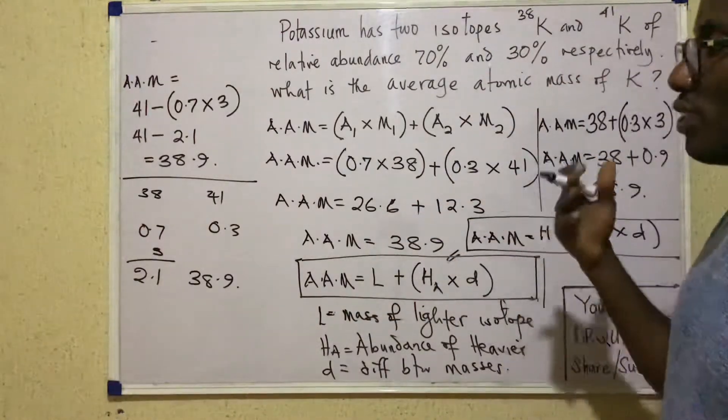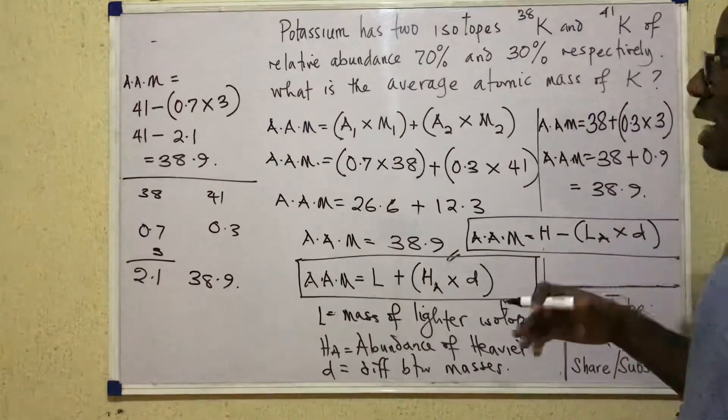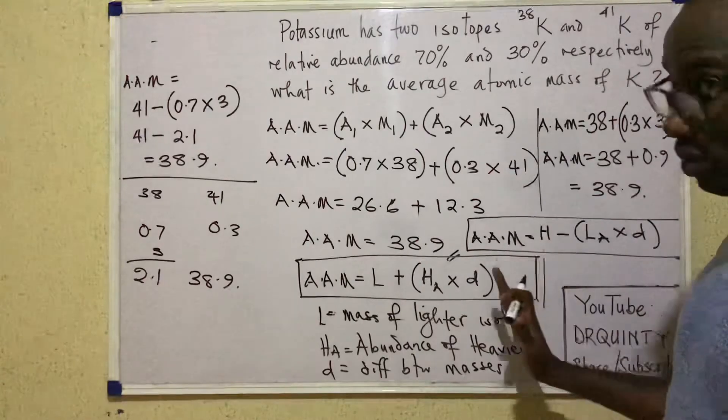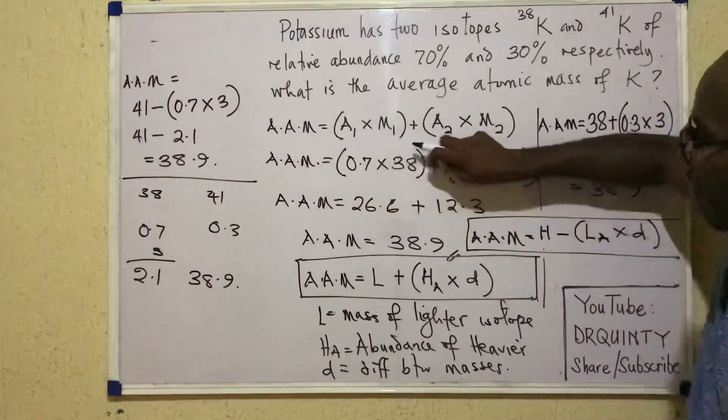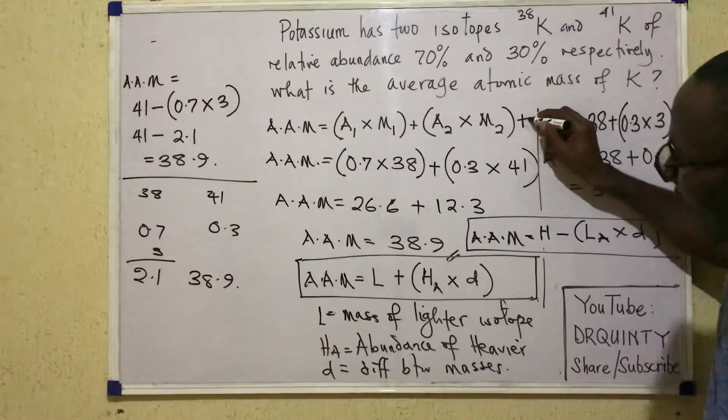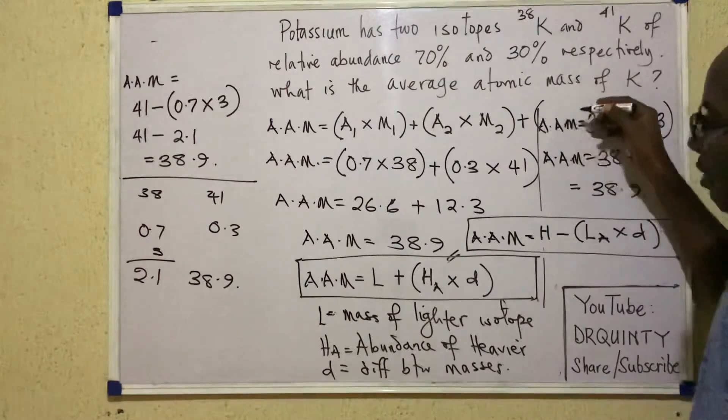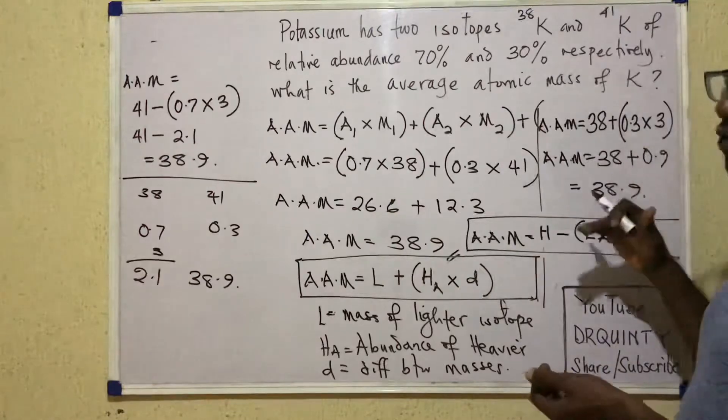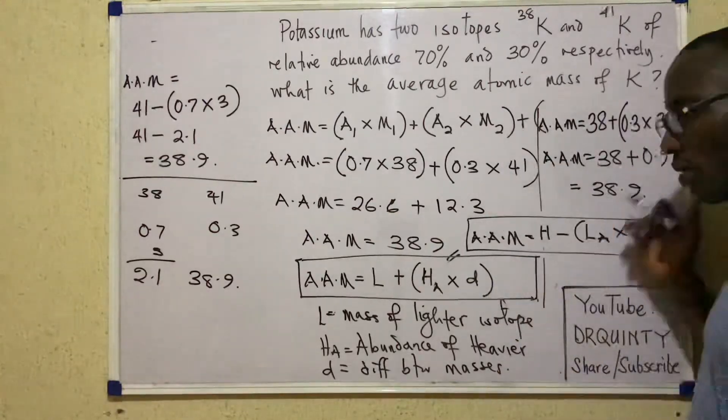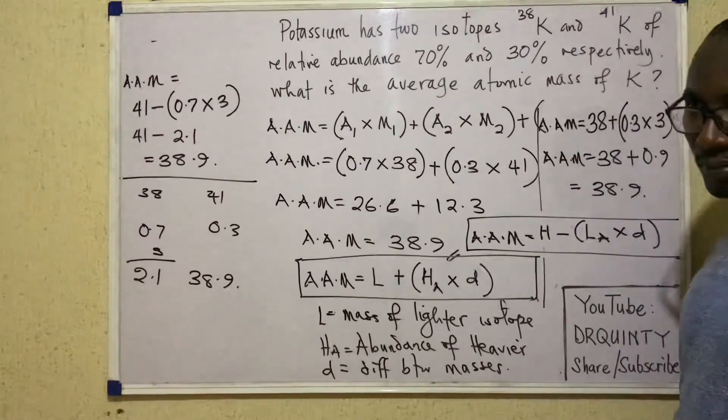But when we have more than two isotopes, then we could begin to have problems in that these formulas will not work. And then we would only have to solve with this main formula. Just that by then, you'll need to add plus abundance of the third isotope times the mass of the third isotope and so forth. So you just continue your formula. Even if you have five isotopes, you go ahead like that up to A5 times M5.